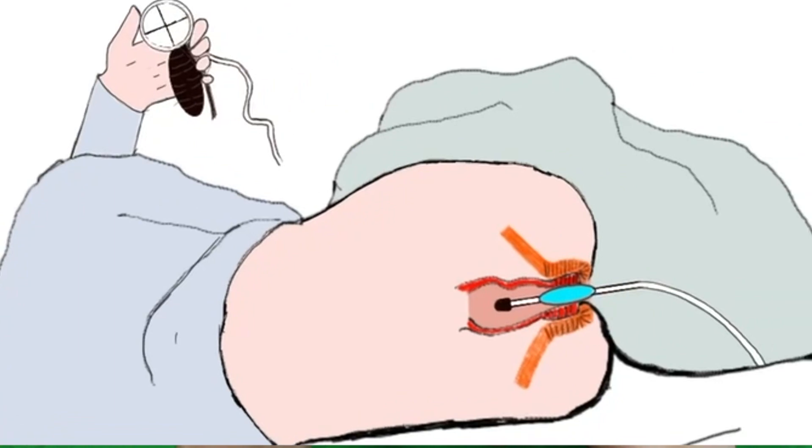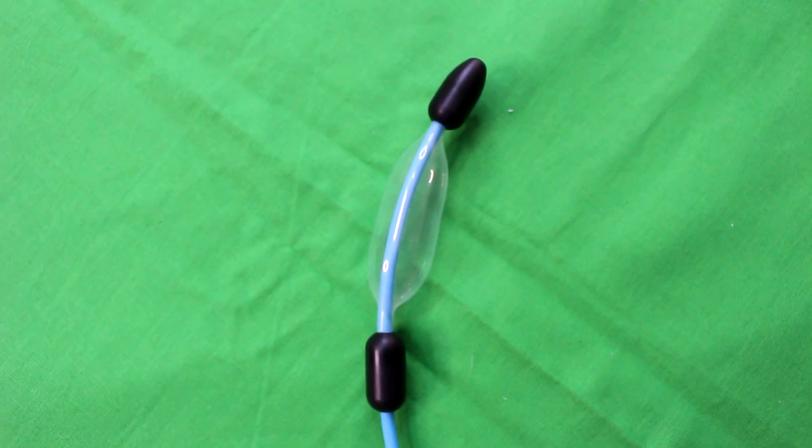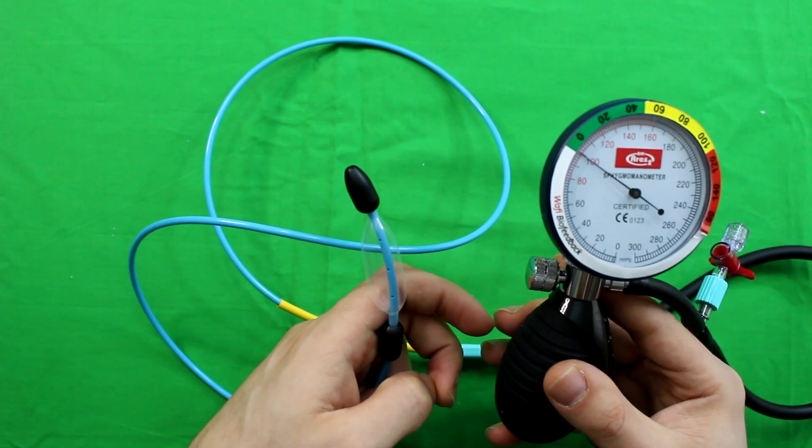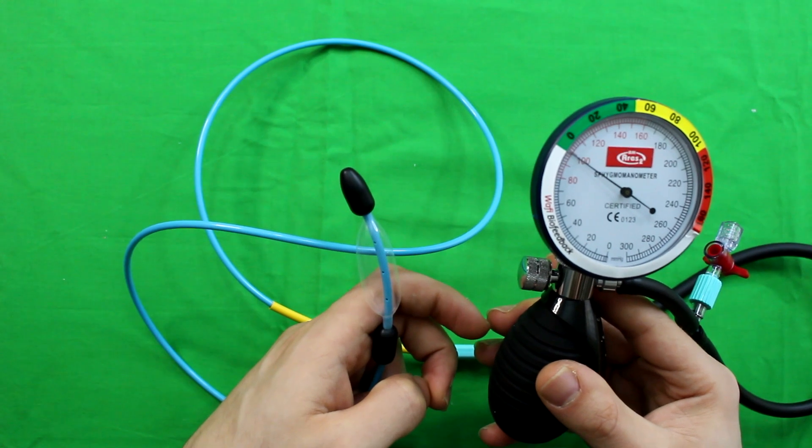Carefully place the balloon into your breech up to the black stopper at the bottom of the balloon. The device is ready for exercise.